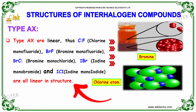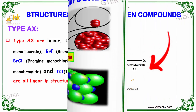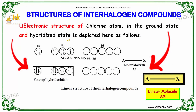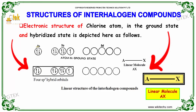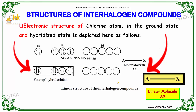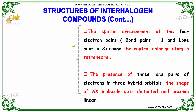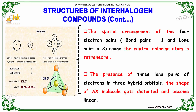You can see the structure of bromine and chlorine here. The electronic structure of the chlorine atom in the ground state and hybridized state is depicted. These are the ground states and these are the hybrid states. The spatial arrangement of the four electron pairs — with bond pair equal to 1 and lone pair equal to 3 — is shown.